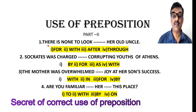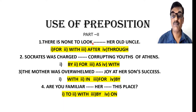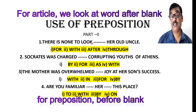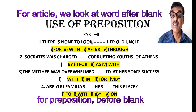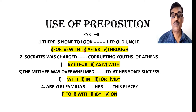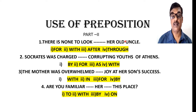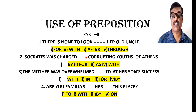The first example: 'There is none to look [blank] her old uncle.' The meaning here is 'take care,' and the phrasal verb that agrees with this meaning is 'look after' — no other preposition is correct. So: 'There is none to look after her old uncle.' The second example: 'Socrates was charged [blank] corrupting the youth.' The word 'charge' generally always takes 'with,' so: 'Socrates was charged with corrupting the youth.'